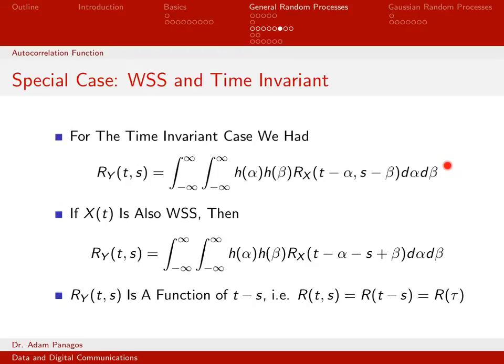If we now assume, in addition to being time-invariant, that we also have a wide-sense stationary input, we know how that simplifies the autocorrelation function. Instead of a two-dimensional time function, we write it as the difference between the first and second time coordinates. So I replace r_x(t−α, s−β) with r_x((t−α) − (s−β)), which distributes to t − α − s + β. Notice on the left the output autocorrelation is written as a function of t and s, but on the right t and s appear only as t minus s, making it a single one-dimensional function of τ = t − s, giving r_y(τ).